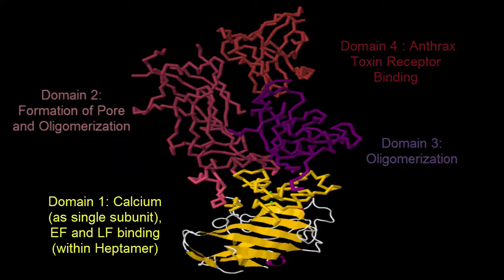Domain one, the amino terminal domain, contains two calcium ions that primarily play a structural role. They introduce a conformation that allows EF and LF to bind after the oligoheptamer is formed.